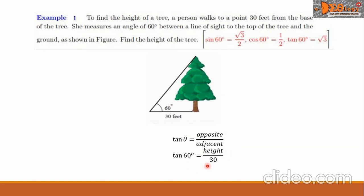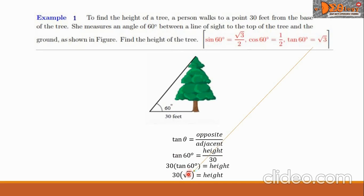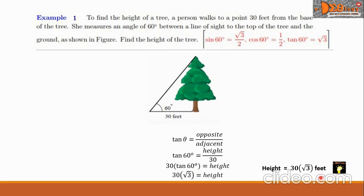Substituting the values, we have tangent 60 degrees equals the height over 30 feet. Simplifying this equation, we cross-multiply 30 to the left side, so we have 30 times tangent 60 degrees equal to the height. Tangent 60 degrees is equal to the square root of 3, so the height is 30√3 feet. We don't forget to affix the unit of measurement — this is our final answer.